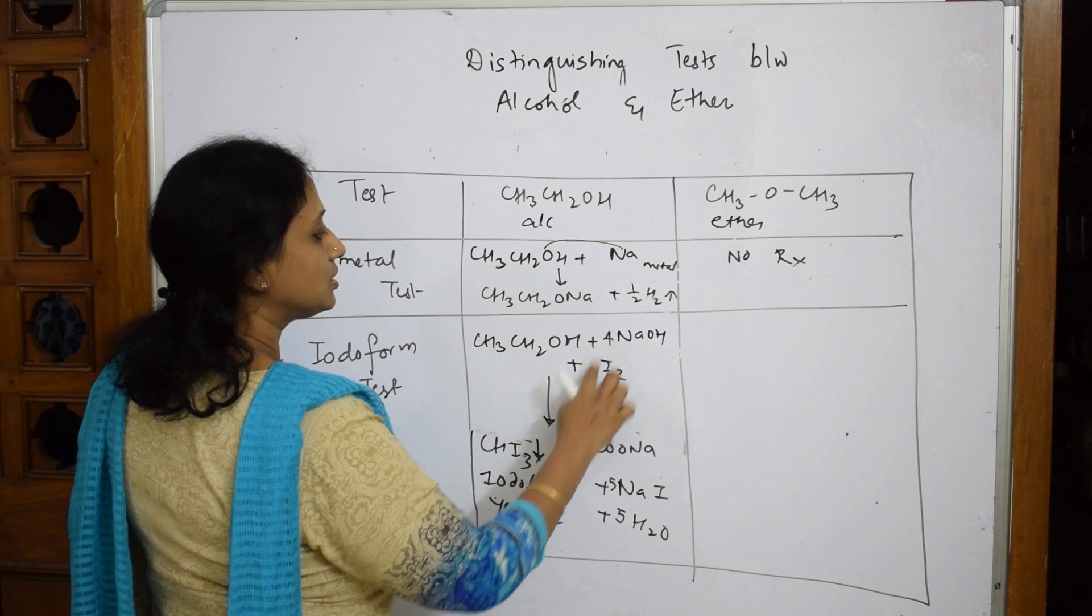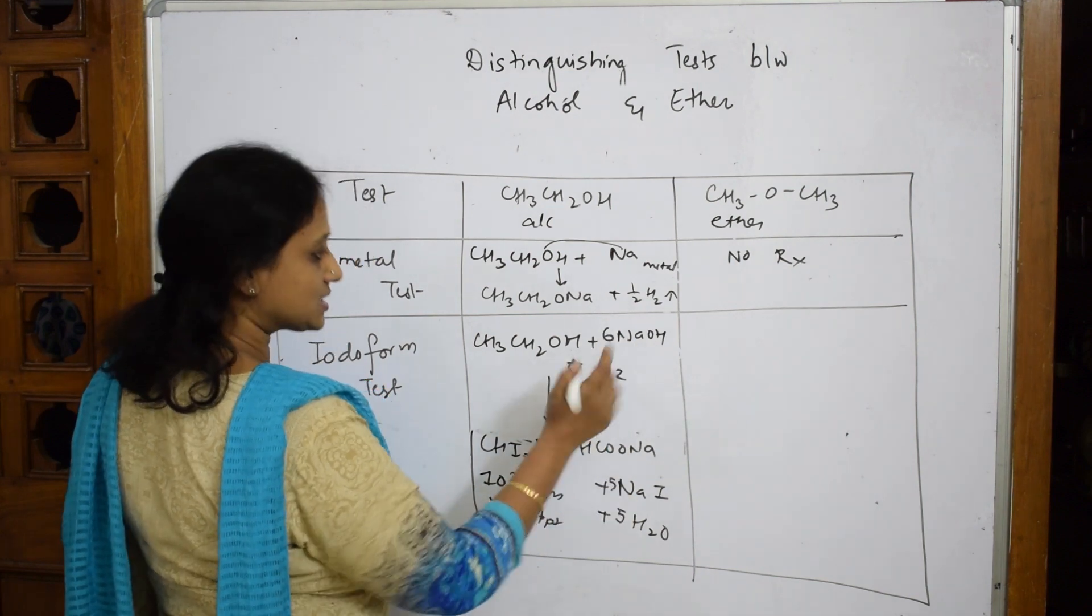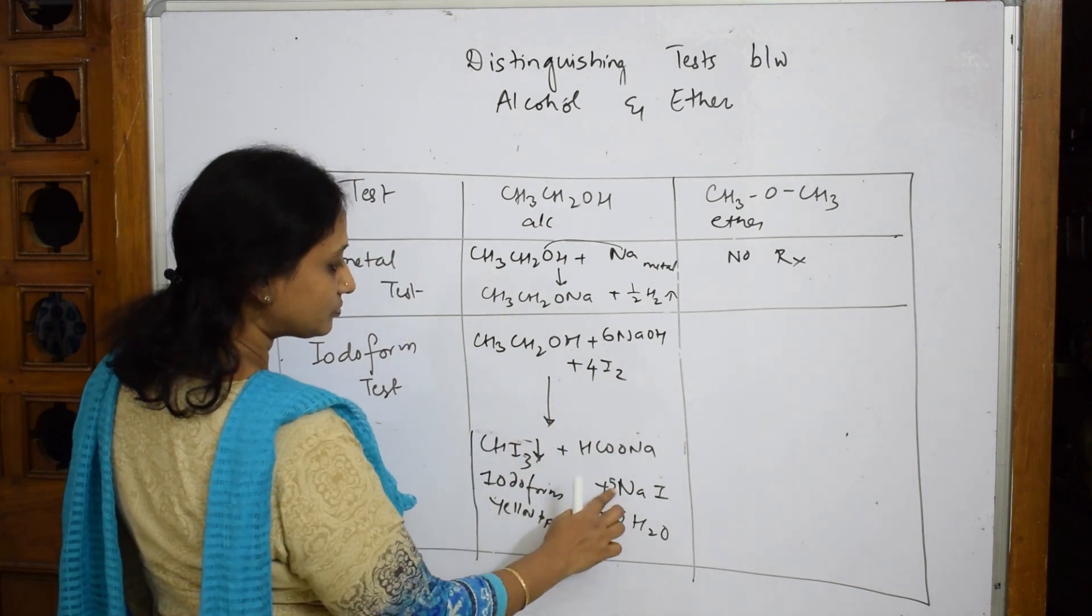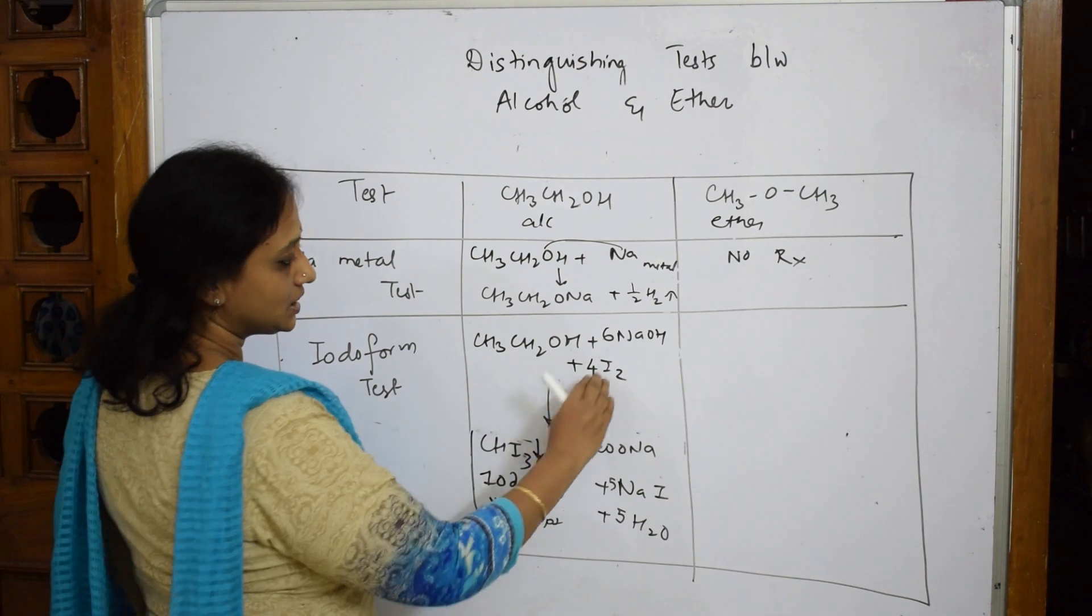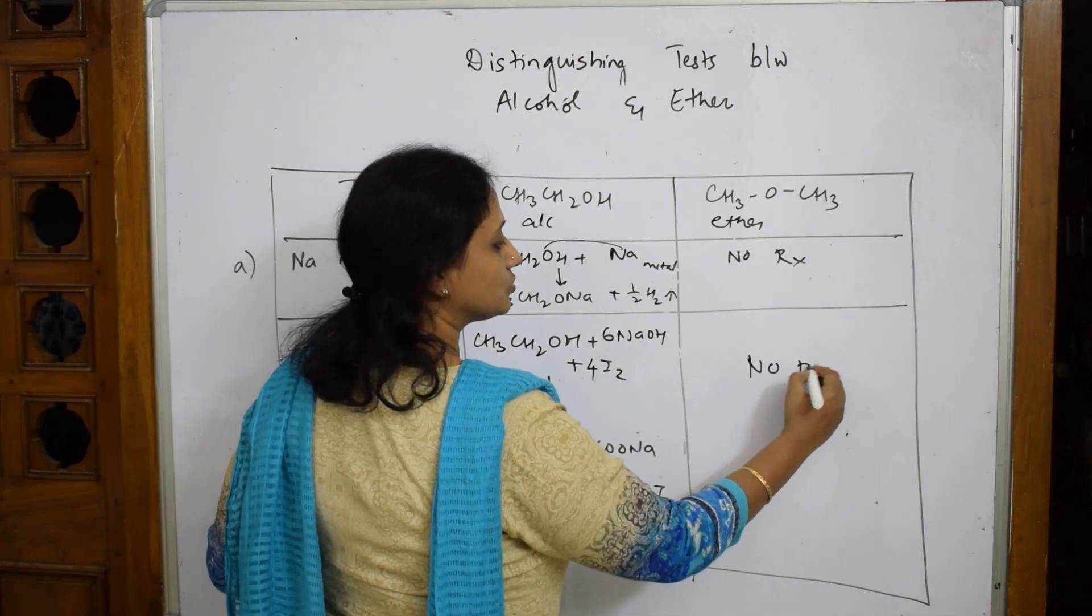No, I did it wrong. This is six moles, isn't it? Six moles of this, because see here five plus one is six. I'm sorry, this is four. Now four twos are eight, eight iodines, five plus three, eight iodines. So this is your iodoform reaction and ethers will not show any reaction.